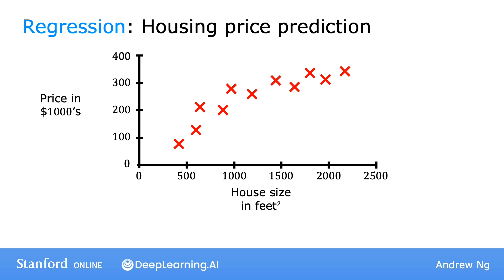Let's dive more deeply into one specific example. Say you want to predict housing prices based on the size of a house. You've collected some data and plotted it. Here on the horizontal axis is the size of the house in square feet — I live in the United States where we still use square feet; I know most of the world uses square meters. On the vertical axis is the price of the house in thousands of dollars. With this data, let's say a friend wants to know what's the price for their 750 square foot house.